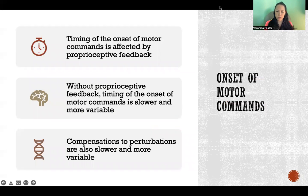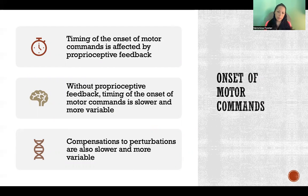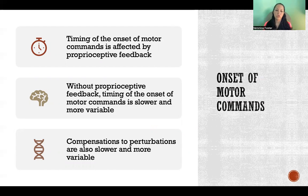The onset of motor commands is also affected by proprioceptive feedback. The timing of that onset is slower and more variable — less consistent from trial to trial — and the onset of the command happens at a slower rate.